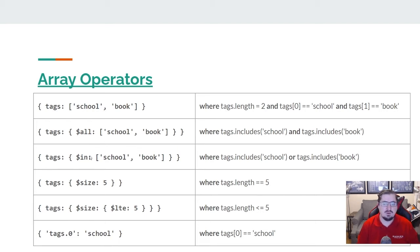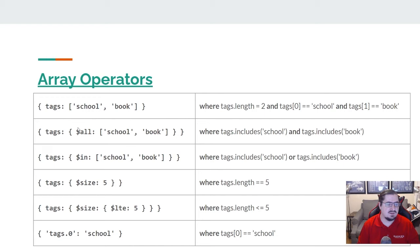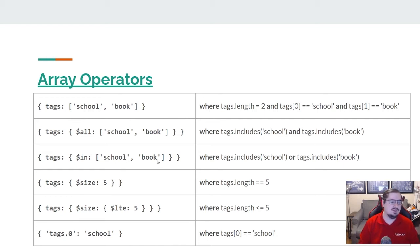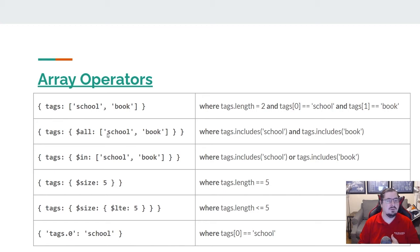Another variant is $in — the $in operator says it needs to have at least one of those. So $all says it needs to have every single one of the elements you provided; $in says it only needs to have at least one. Here we're saying it must have either 'school' or 'book' — if it has one of those two it passes, but it doesn't have to have both. Both of those can be helpful in different queries depending on what your goal is.